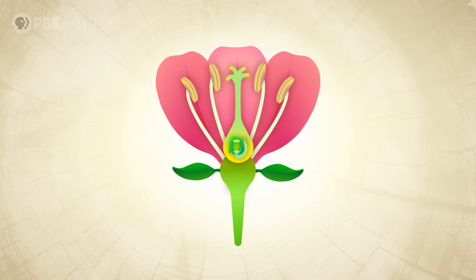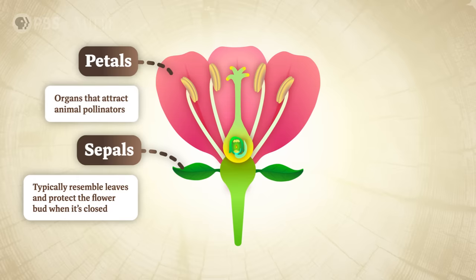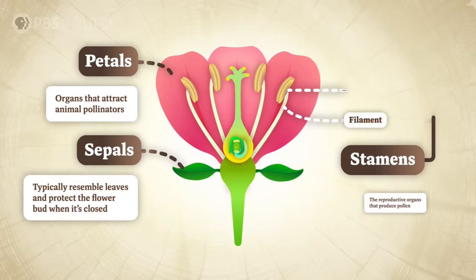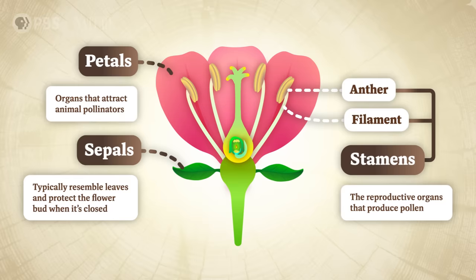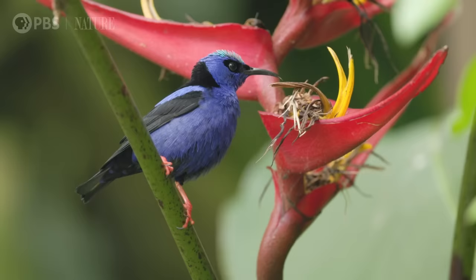Flowers, whether from millions of years ago or today, all have structures that enable them to flourish on land. A typical flower consists of four types of organs arranged in concentric circles. In the outermost circle are the sepals, which typically resemble leaves and protect the flower bud when it's closed. Next come the petals — beautiful, showy organs that attract animal pollinators. After the petals come the stamens, the reproductive organs that produce pollen. And the innermost circle contains the pistil, with the ovary and ovules at its base. This combination of organs allowed the angiosperms to evolve specialized flower shapes to attract and reward pollinators.